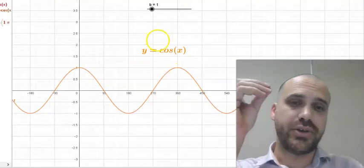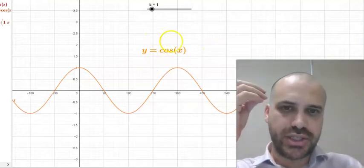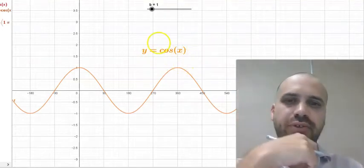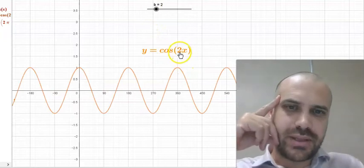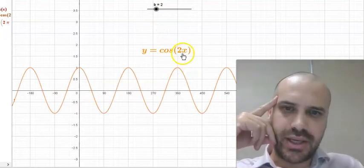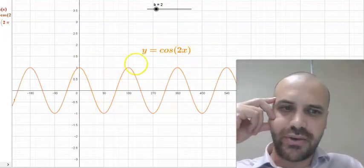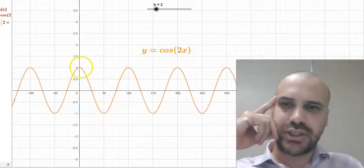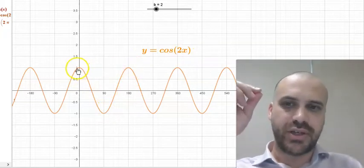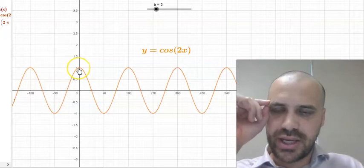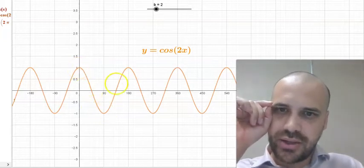Now we can change the period of the function by changing something about the function itself. Watch this. We can see that by adding a 2 in here, we've changed the period of this function. The function's period has actually halved. You can see the top is here now at 0 still, and then 180.